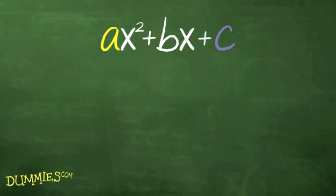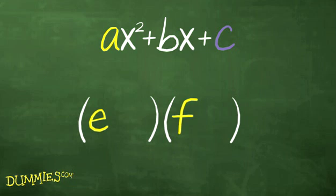Fourth, arrange your choices as binomials. The e and f have to be in the first positions in the binomials, and the g and h have to be in the last positions. They have to be arranged so the multiplications in step three have the correct outer and inner products.